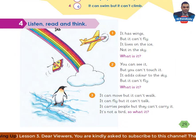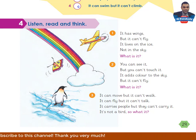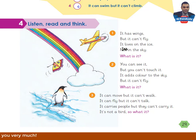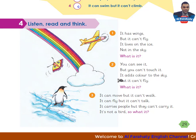Activity 4 - listen, read, and think. Now we will listen to these riddles and try to solve them. Listening 3.6. Riddle 1: it has wings but it can't fly. It lives on the ice, not in the sky. Riddle 2: you can see it but you can't touch it. It adds colour to the sky but it can't fly.